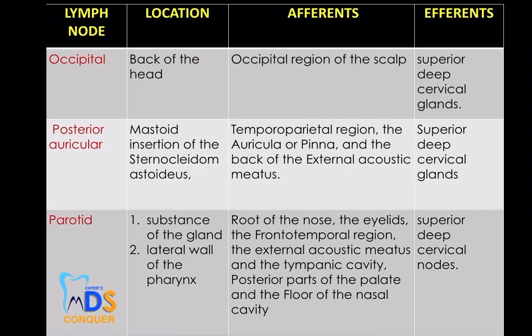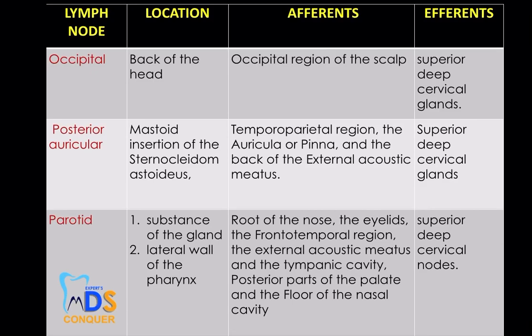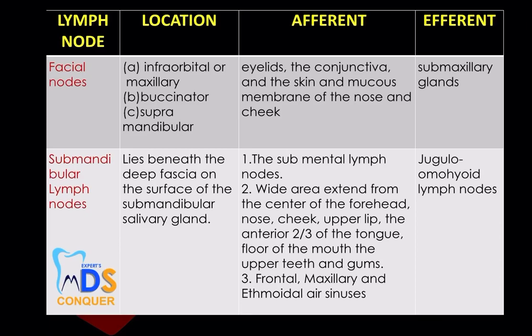For an essay answer, draw a box showing the afferents and efferents of each individual lymph node. For example, the occipital node: afferents from the occipital region, efferents to the superior deep cervical glands. The posterior auricular: afferents from the temporal region, auricular area, pinna, and back of the external auditory meatus; efferents to superior deep cervical glands. For facial, submandibular, and submental nodes — write location, afferents, and efferents. This is the main heart of your answer.